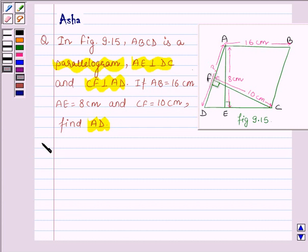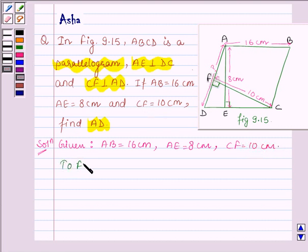Let us now start with the solution and here we are given AB is equal to 16 cm, AE is equal to 8 cm and CF is equal to 10 cm and we have to find AD.